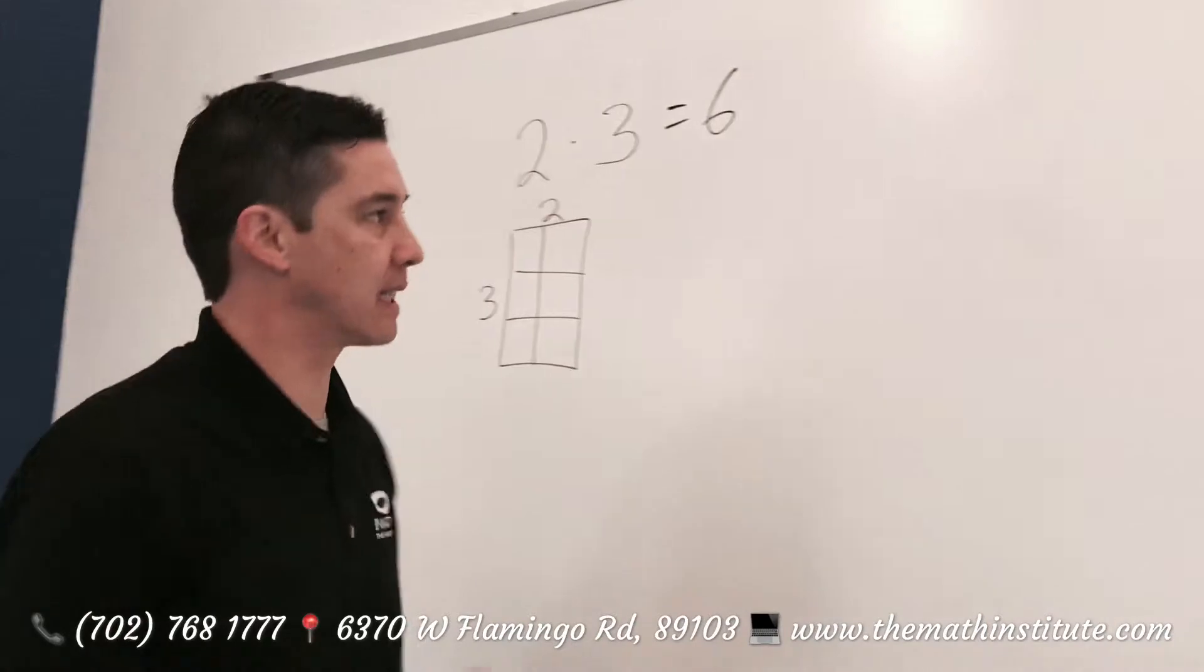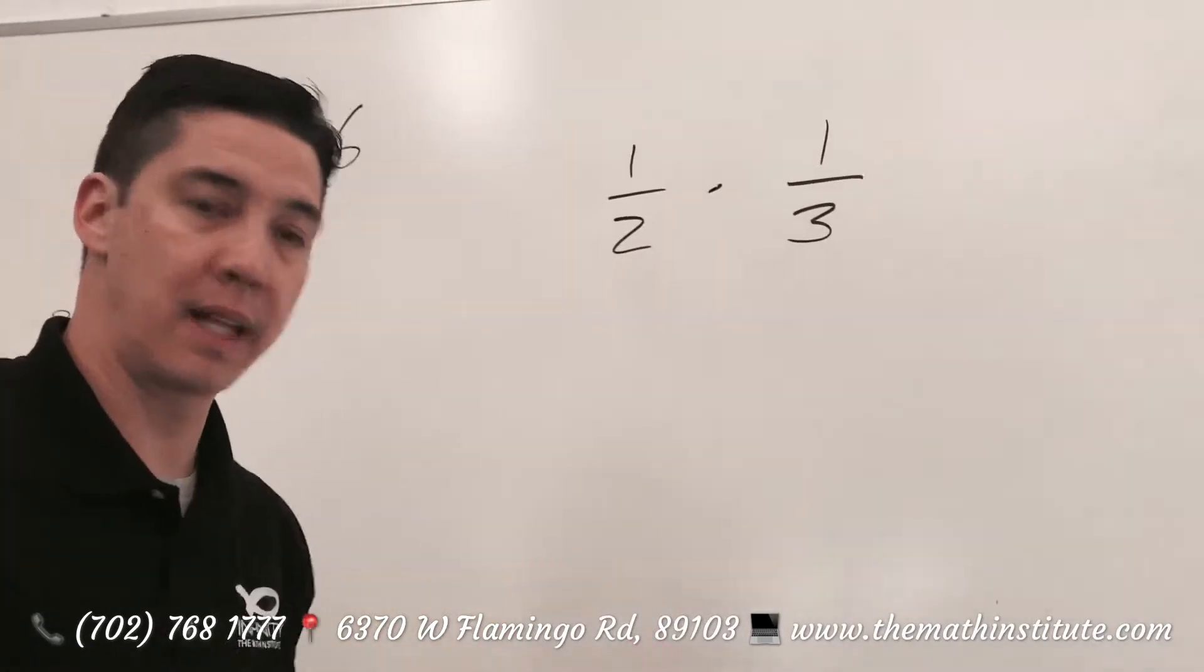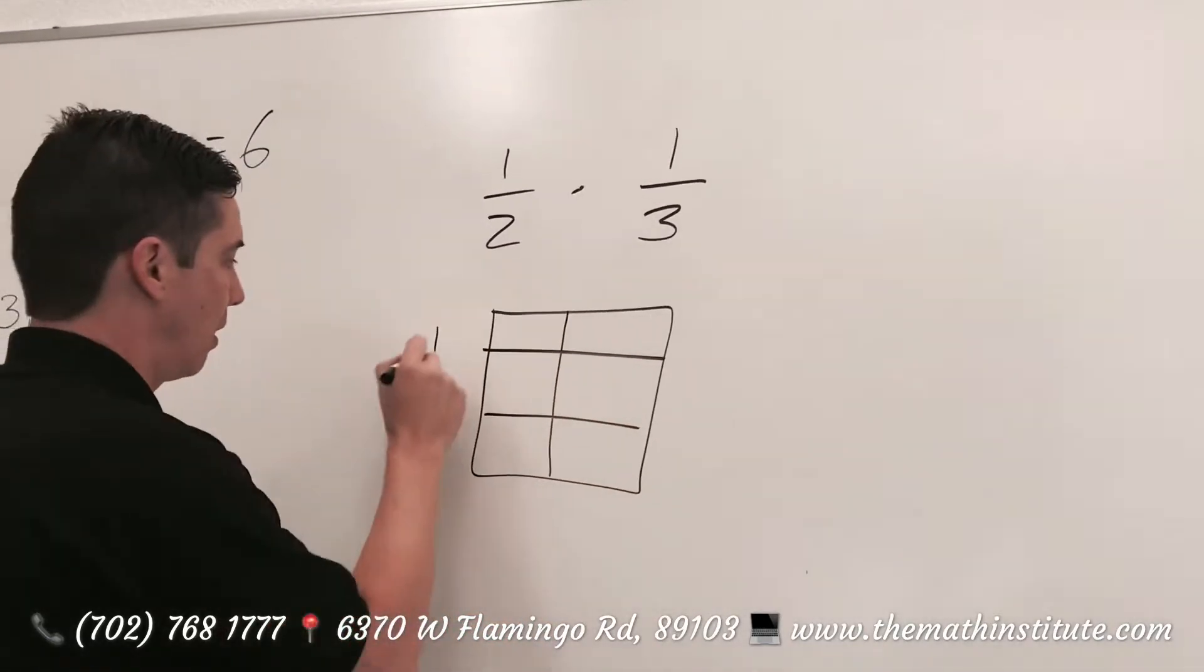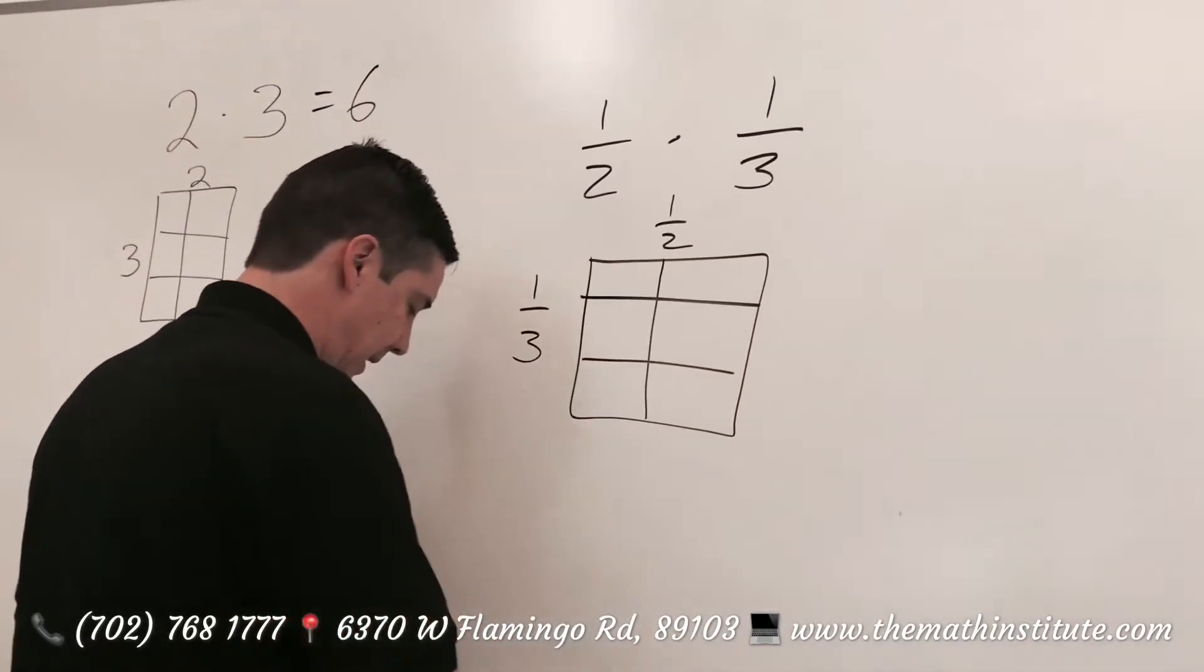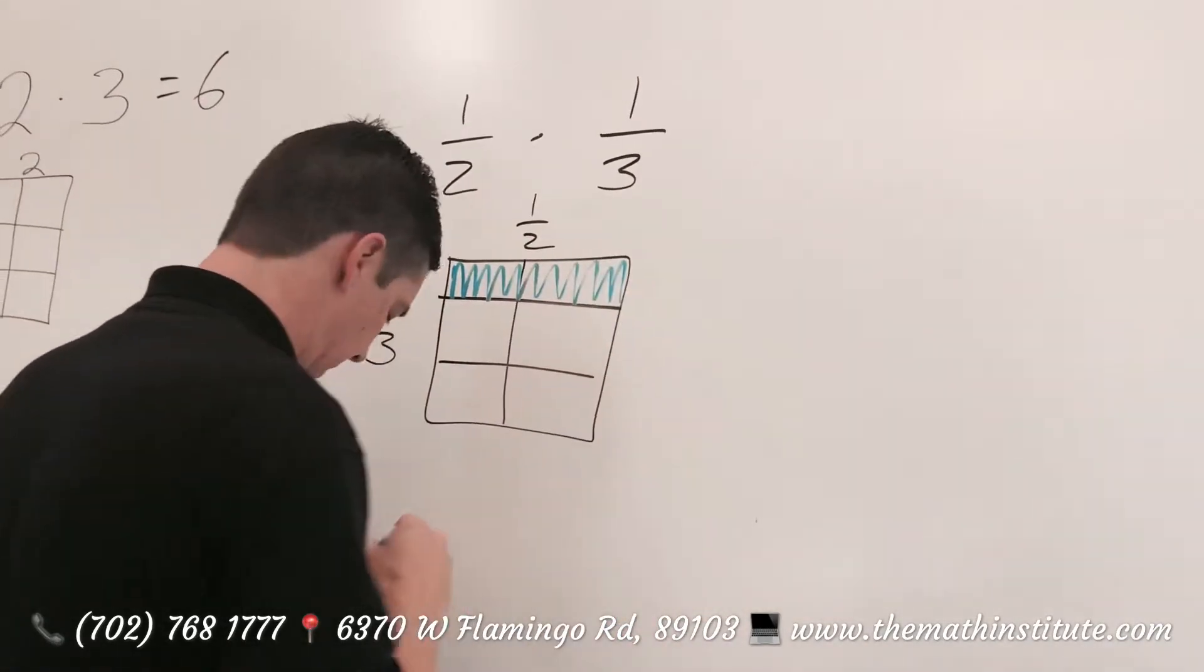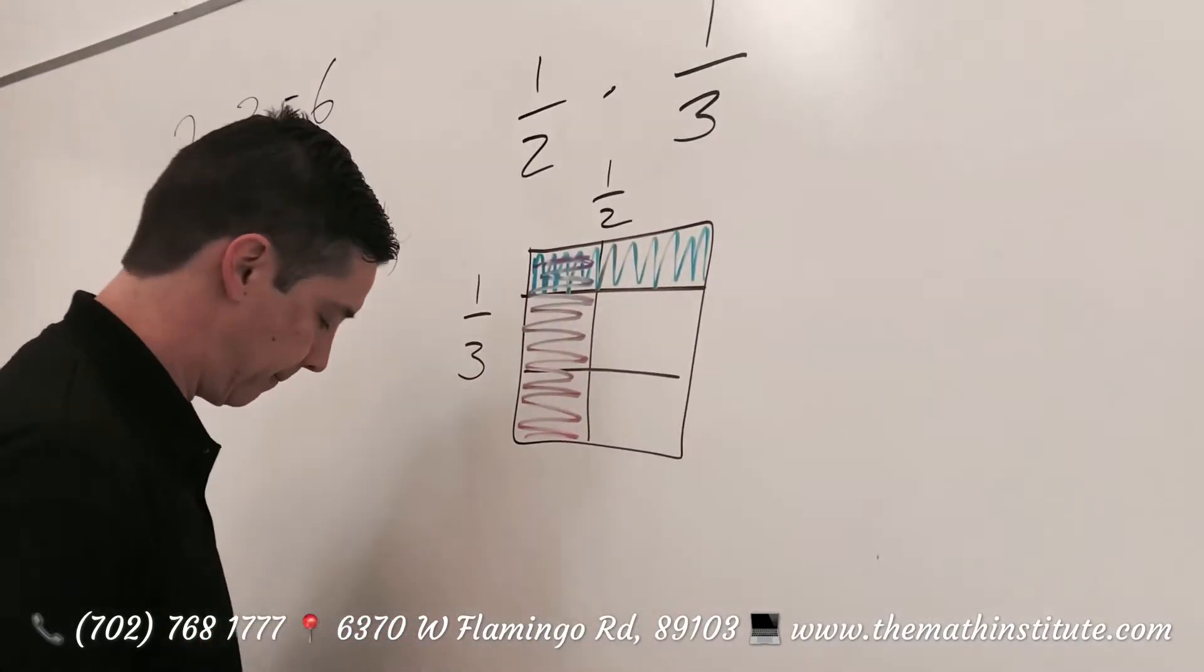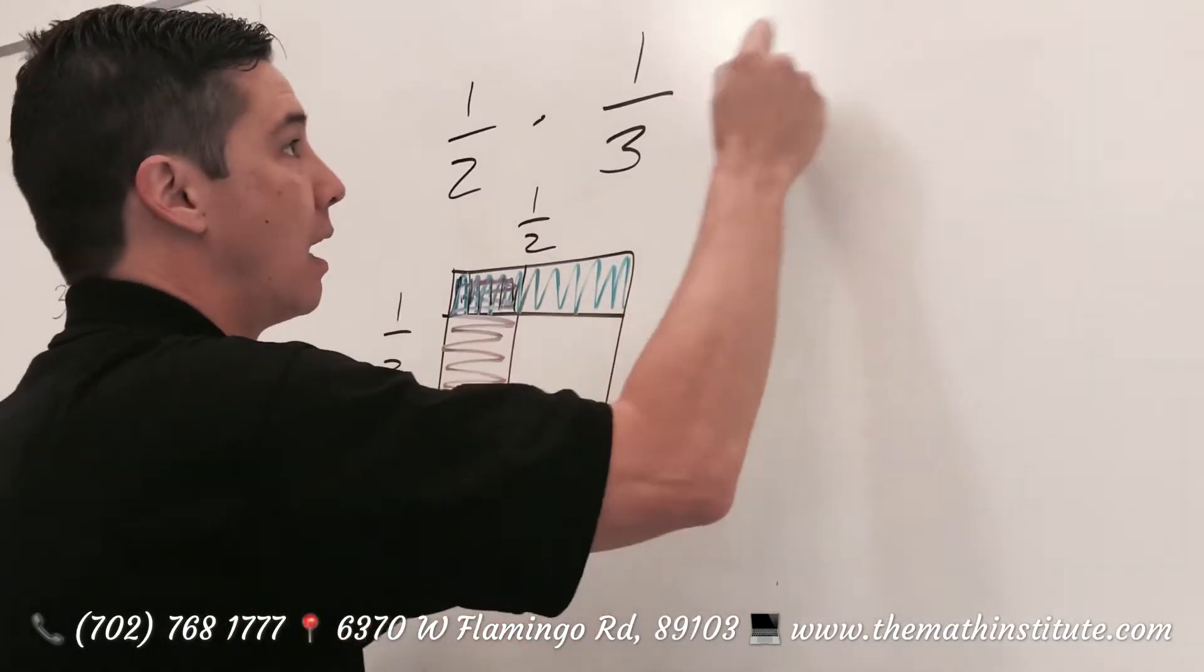It's the same exact thing with fractions, guys. What if we multiply 1 half times 1 third? Well that's very easy. We cut this box in thirds: 1 third, 1 half. This is 1 third, this is 1 half, and where they overlap is 1 sixth.